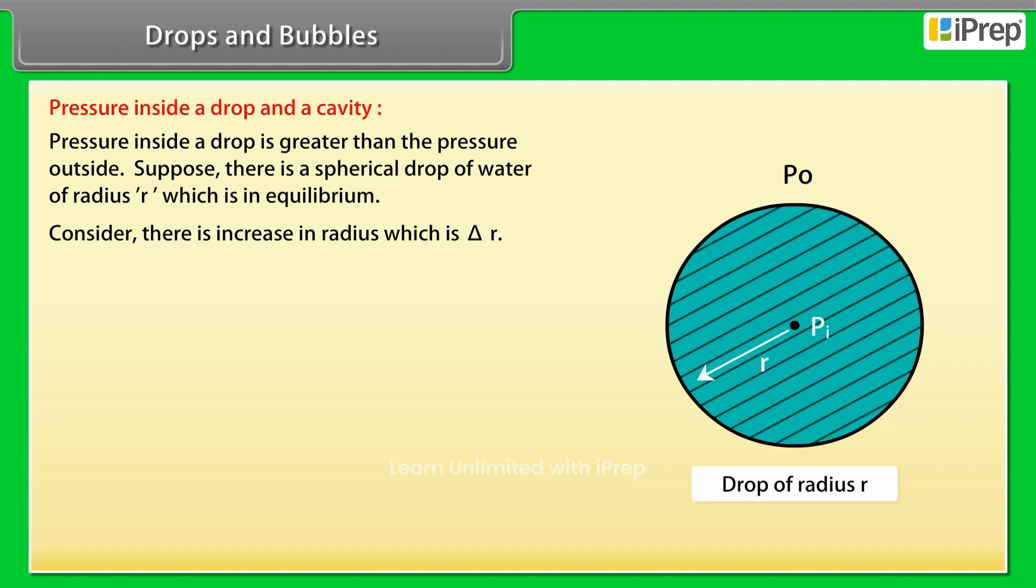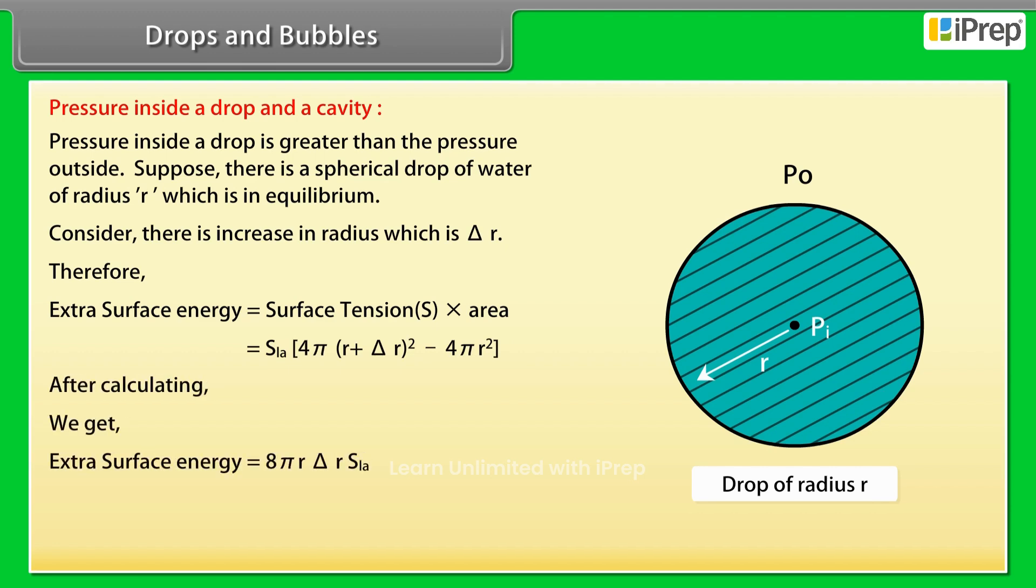Therefore, extra surface energy is equal to surface tension S into area: surface tension S into 4π(r + Δr)² minus 4πr². After calculating, we get extra surface energy is equal to 8πr·Δr·S.